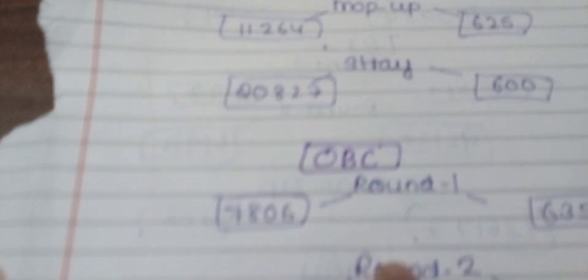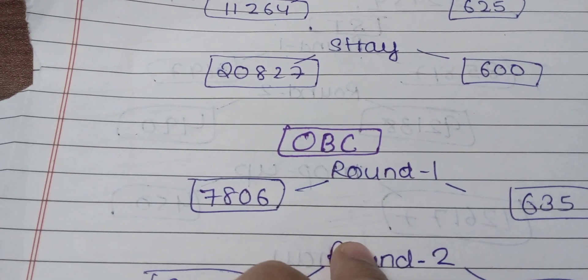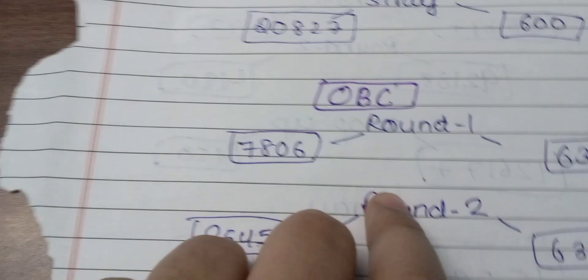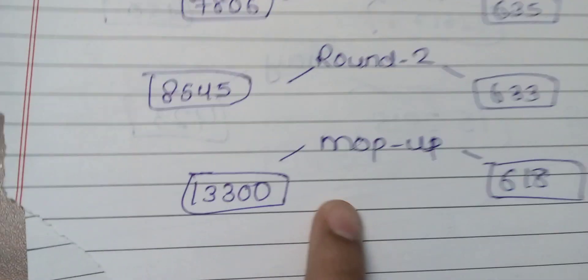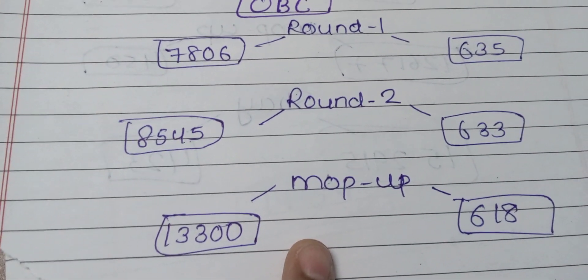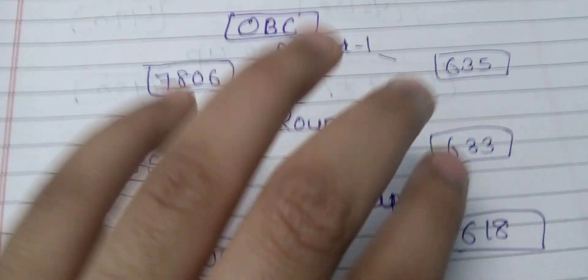OBC was 635 marks and 7806 rank. Round 2 was 633 marks and 8545 rank. Mop-up was 618 marks and 13300 rank.